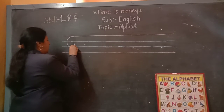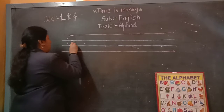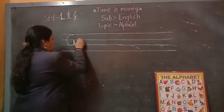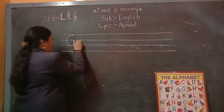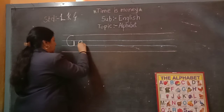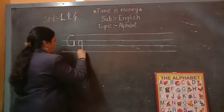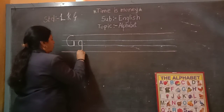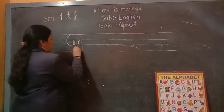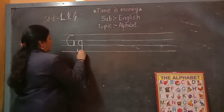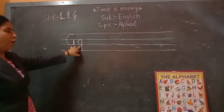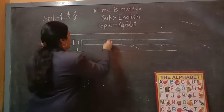Which letter is this? Capital G. And now look here. Start from the first blue line — a circle, a curve, a standing line, and end with the red line. And curve. Small g.